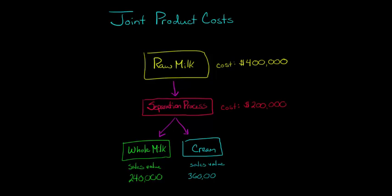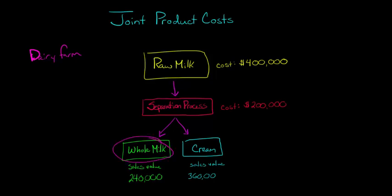Sometimes multiple products are produced from the same input. Take a dairy farm for example. If we have cows producing milk and then process that milk through some kind of separation process, we end up with whole milk and some cream. So we've got two different products and they each have their own unique sales value.